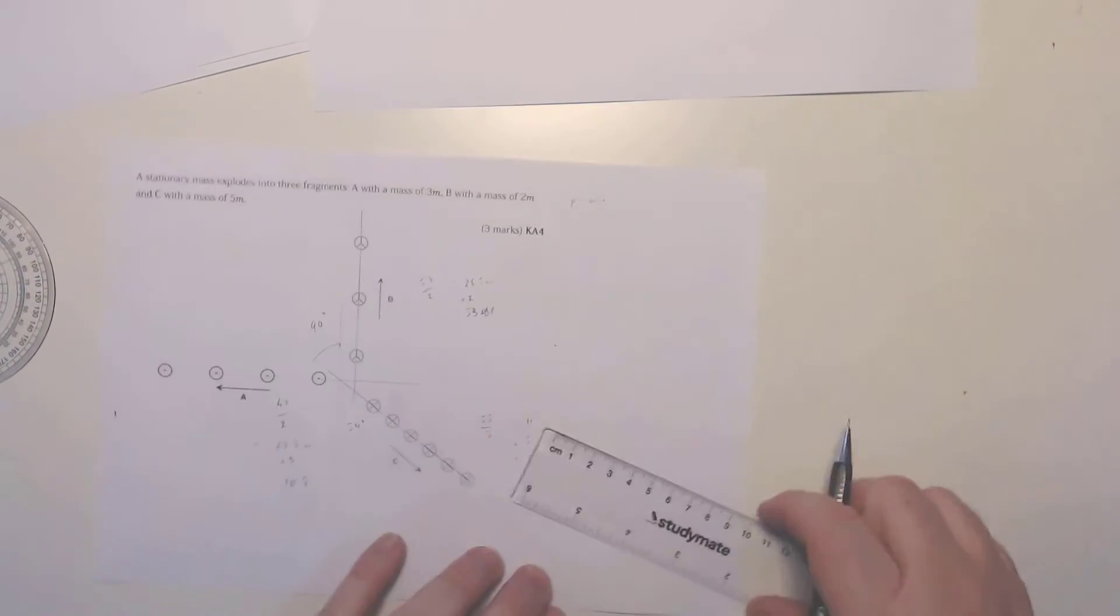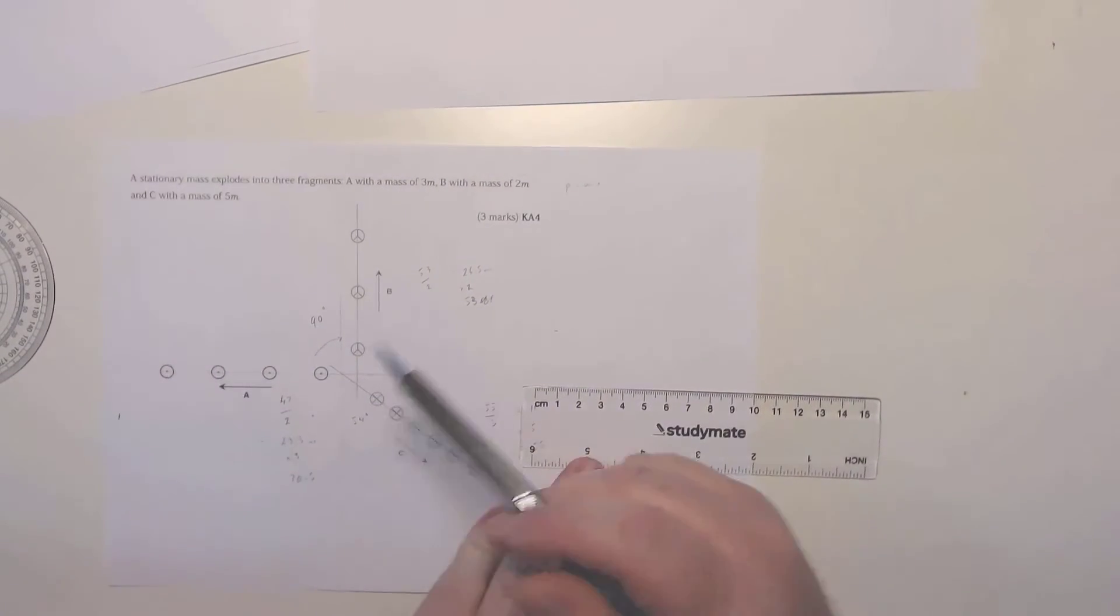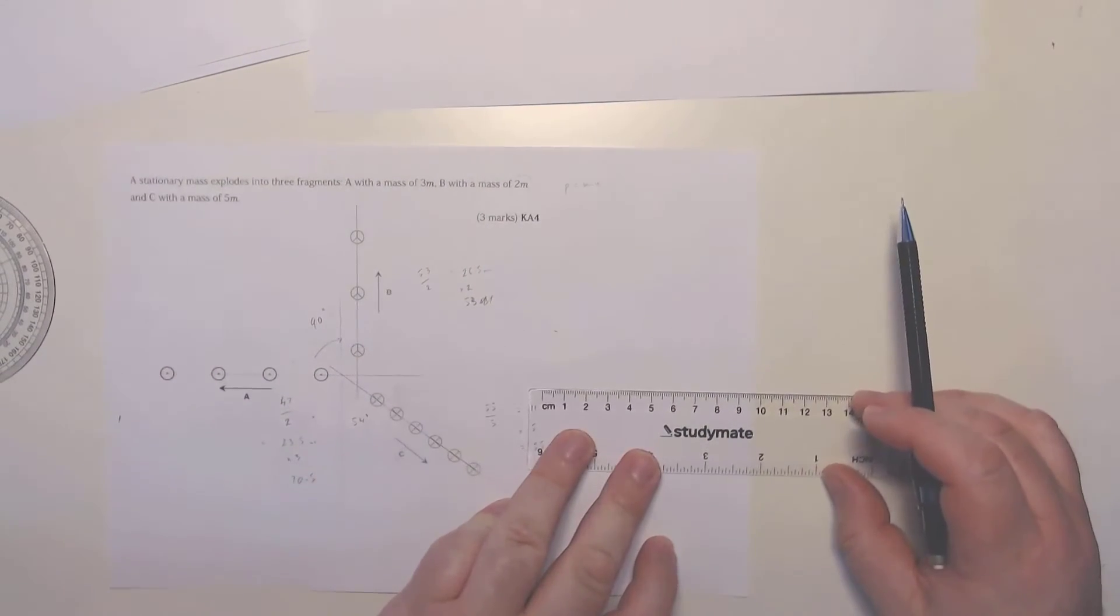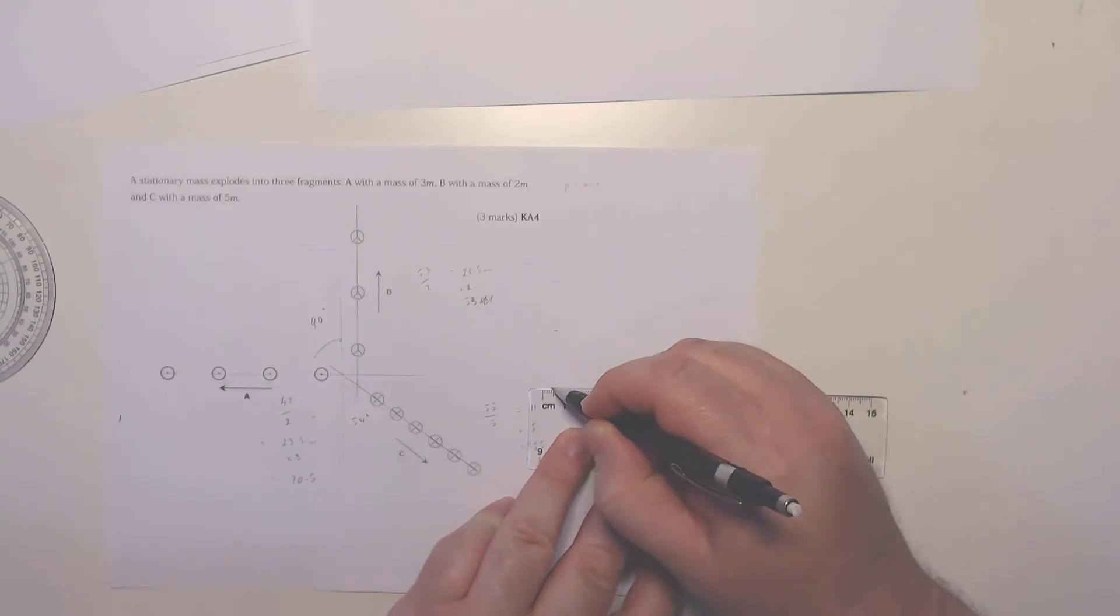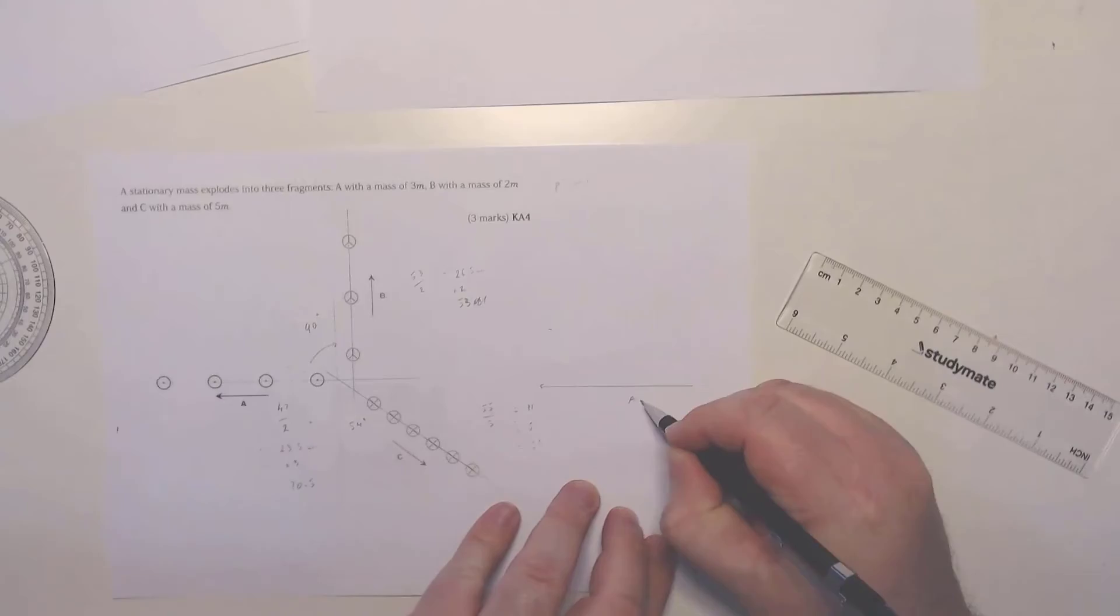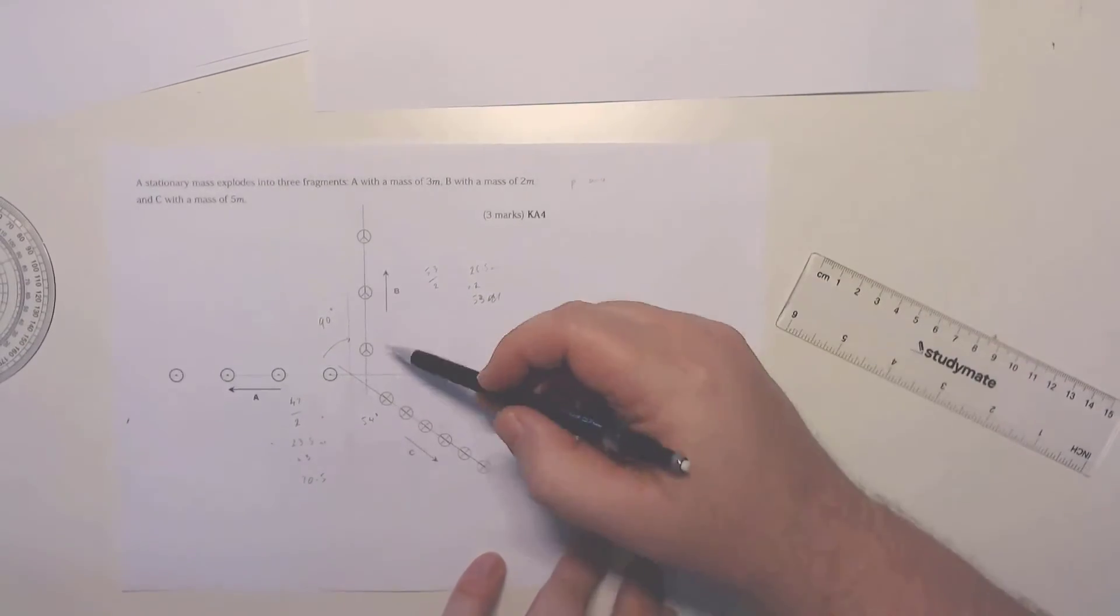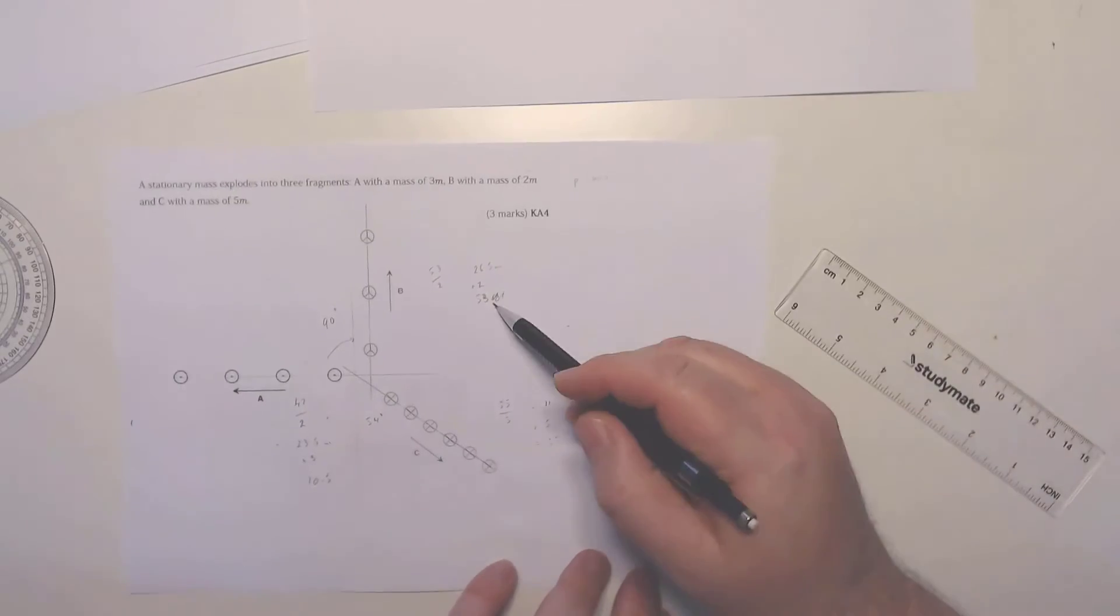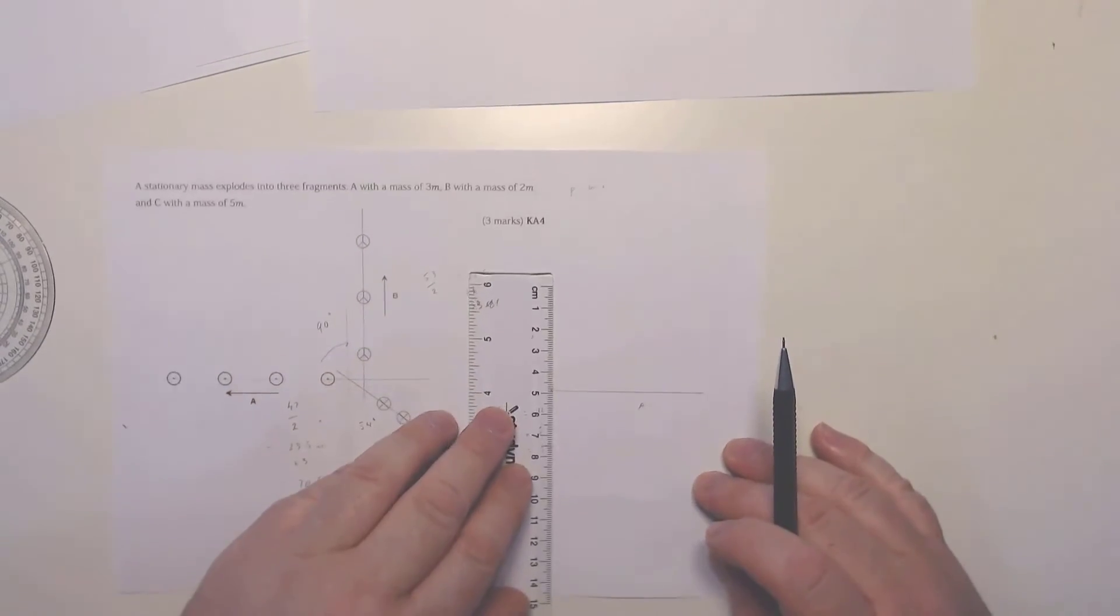So now if I do my vector diagram, I'm going to draw vector A at 70.5. So there's 70, start from the halfway mark there, go all the way across. So that is vector A. Now, tail to head, tail to head, so now I'm going to draw vector B and that's actually 53 millimeters.